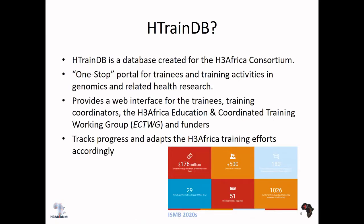This working group involves funders, and one of its main tasks is to track the progress of people in H3Africa and H3Bayonet, and to adapt the training efforts accordingly. Some figures from the H3Africa website give an idea of the funding spent for the whole project. We have more than 500 consortium members, along with figures concerning the number of projects, publications, and so on.